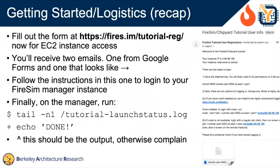Quick recap if you weren't here at the very beginning: basically what you should have done already is fill out this form. This Google form should have sent you first a confirmation email and then a second email with an IP address, private key, and some instructions to let you log in. Once you're logged into the manager, you should have run this command and hopefully got it to print out 'done'. If this didn't work for you, flag one of us down before we move on, otherwise you won't be able to follow along with the tutorial.